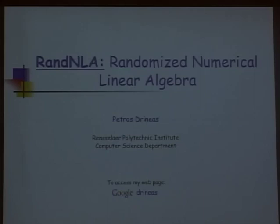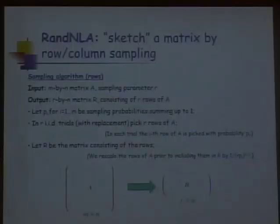M.I.'s numerical linear algebra. I'm going to discuss one of the simplest ways to create a succinct sketch of a matrix: apply a simple sampling algorithm and pick a few rows. The objective is to take the matrix A, an M by N matrix, and summarize it by keeping only a few of its rows to create a smaller R by N matrix.